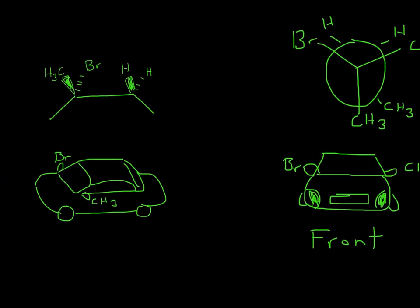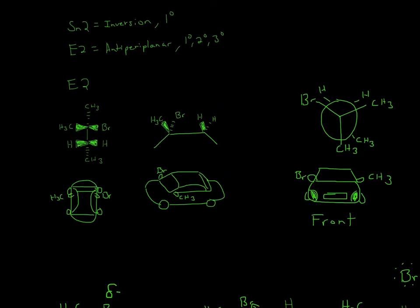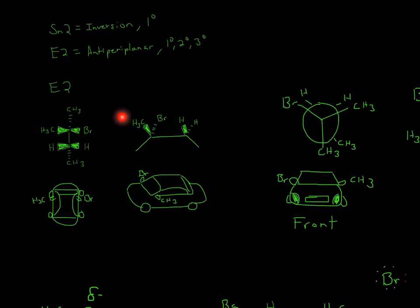Now I convert the Fischer projection into a Newman projection. If I'm a person standing here looking at the molecule, just like looking at the front of the car, I would see the front of the molecule. That's why Br is on the left — because looking from the front, Br is on the left, and CH3 is on the right and CH3 is at the bottom.